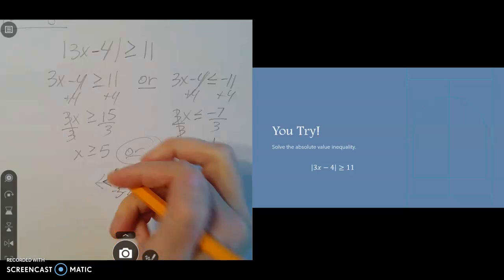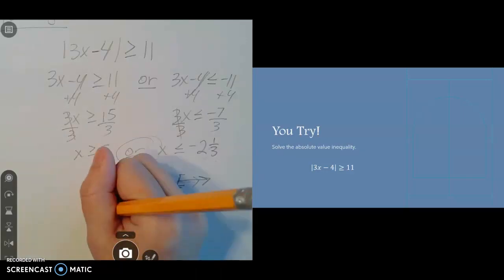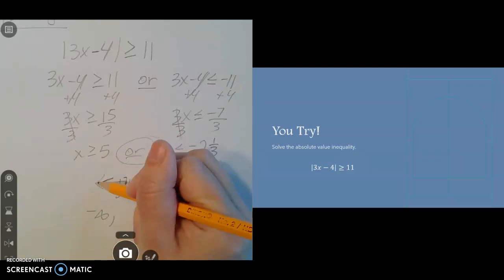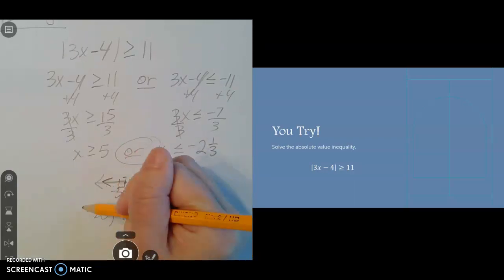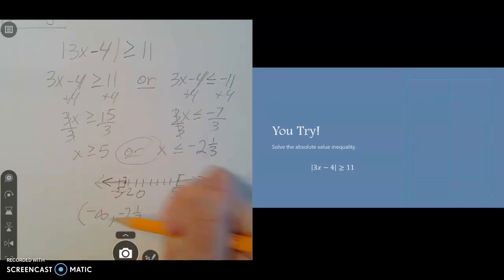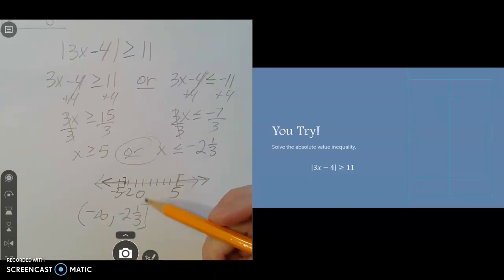So we're going to start with the left piece first. How far left does it go? It keeps going forever in the negative direction, so that's negative infinity. How far right does it go? Well, it stops at negative 2 and a third, or negative 7 thirds if you want to write it that way. So the negative infinity will have a parenthesis. The negative 2 and a third will have a bracket because of the or equal to part.